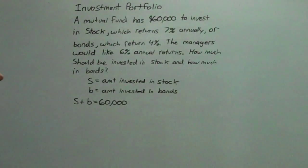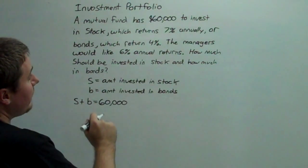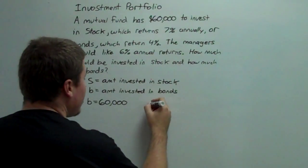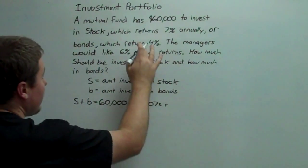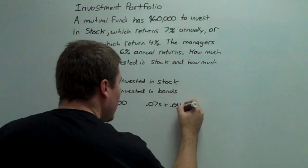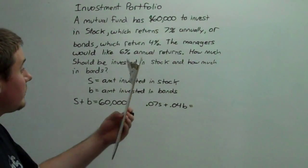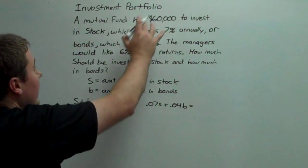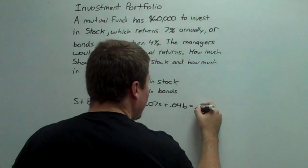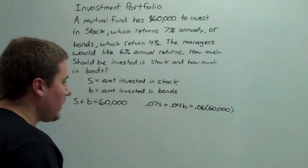Now we need to make a statement about the percentages — that is, how much money are these actually going to earn? The amount of money our stock is going to earn is 0.07S, so 0.07S plus 0.04B is going to be the total return on our investment. The mutual fund managers want 6% annual returns, so that's 0.06 times 60,000.